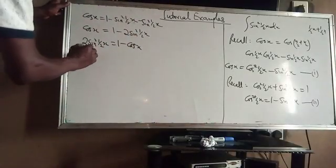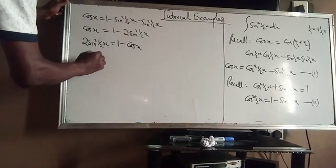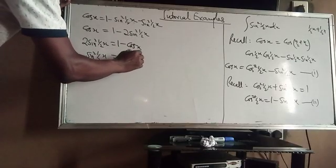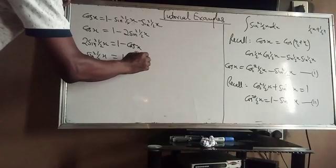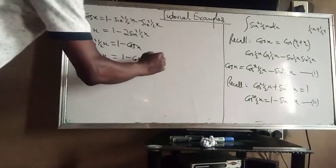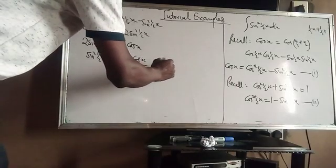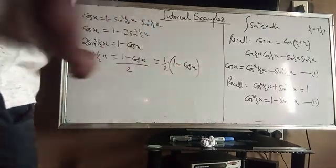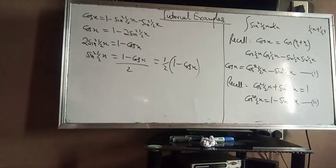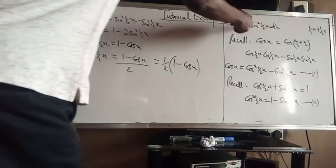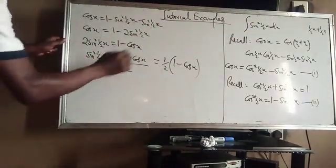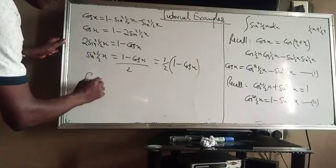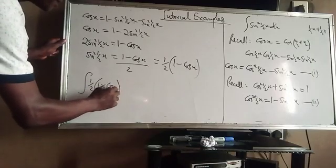Dividing both sides by 2, sin²(x/2) = (1 − cos x)/2, which is half of (1 − cos x). So the expression I want to integrate is now half of (1 − cos x).